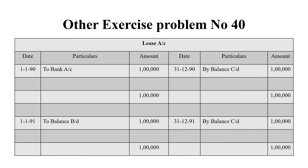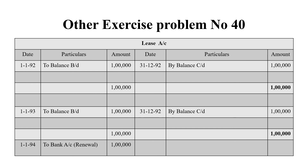Next is the Lease Account — that is very easy. In the first year, we purchased a lease for 1 lakh, credited to Bank Account. Balance carried down is 1 lakh. For years 1992 and 1993, balance brought down and carried down remain at 1 lakh. In 1994, the lease is renewed and the asset value remains 1 lakh.